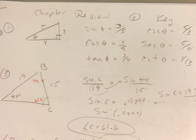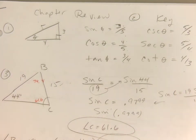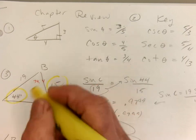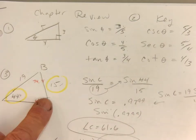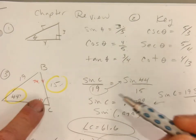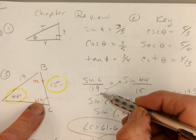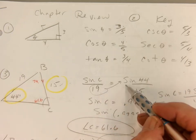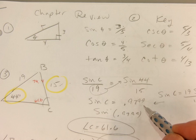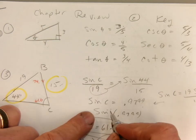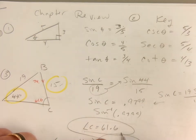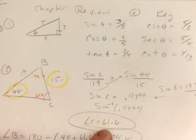Number three. What you know right off the bat is a pair of opposites, so you're going to use the law of sines. I'm going to find angle C: sine of C over 19 equals sine of 44 over 15. I multiplied by 19, got a decimal, took sine inverse of that decimal, and wound up with 61.6 degrees.